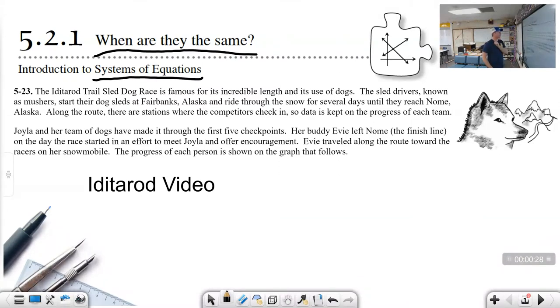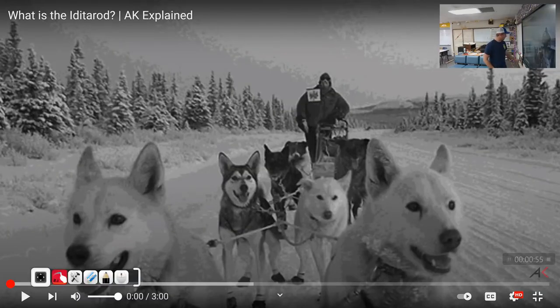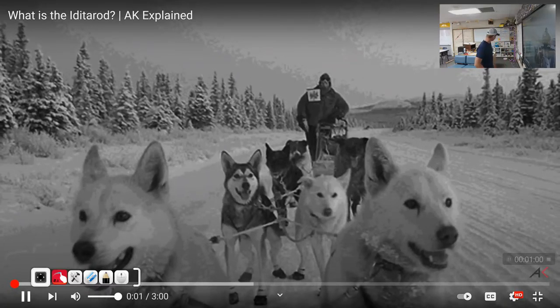The Iditarod Trail Sled Dog Race is famous for its incredible length and its use of dogs. The sled drivers, known as mushers, start their dog sleds at Fairbanks, Alaska and ride through the snow for several days until they reach Nome, Alaska. Along the route there are stations where the competitors check in so data is kept on their progress. In class, I like to show this YouTube video on understanding the Iditarod Trail Sled Dog Race.